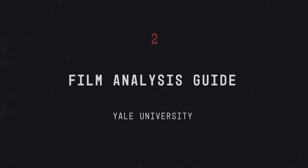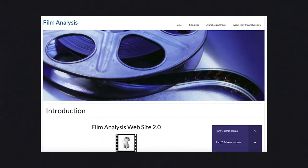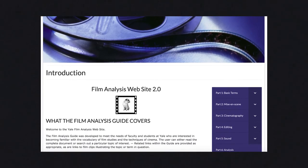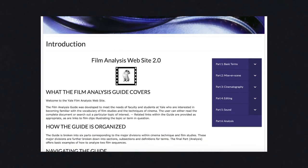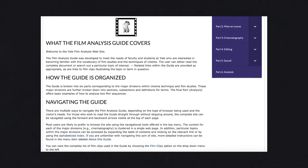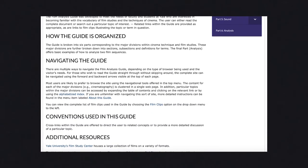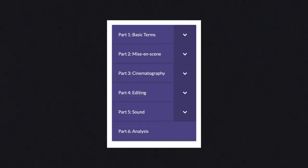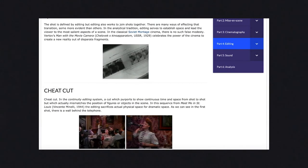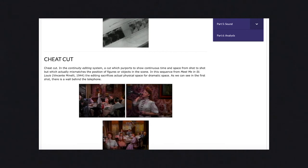Second on the list is the Film Analysis Guide developed by Yale University. Although technically not a book, this website is a very useful resource for learning the technical terms required for film analysis, and was a resource I used as an undergraduate. The guide covers terms you'll come across frequently in writing on cinema and includes a breakdown of the different formal techniques in cinematography, editing and sound.